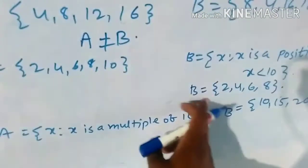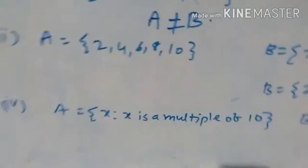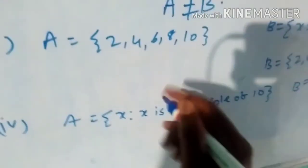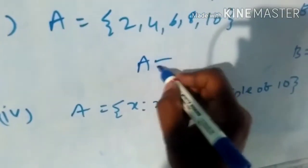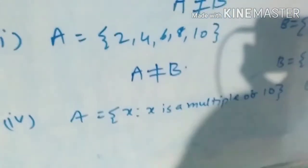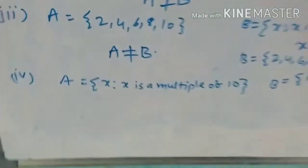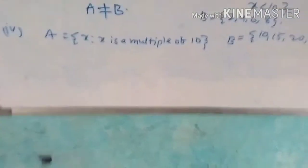Now check: 2 is there, 4 is there, 6 is there, 8 is there, but 10 is not there in B. So 10 is not present, therefore A is not equal to B.